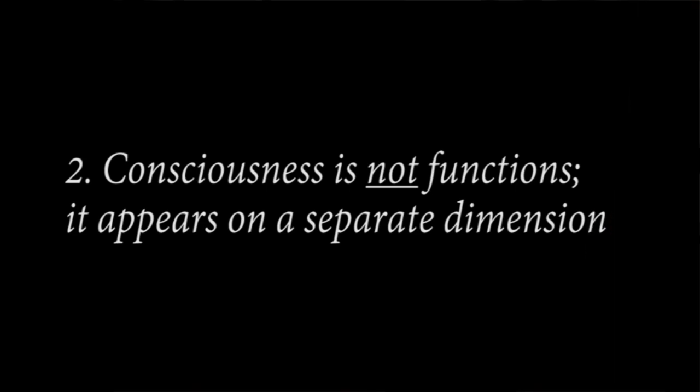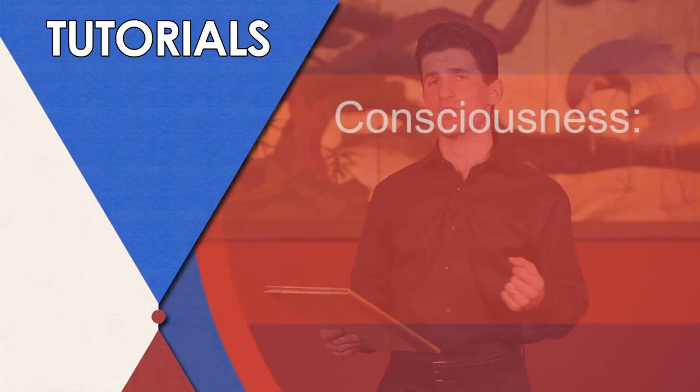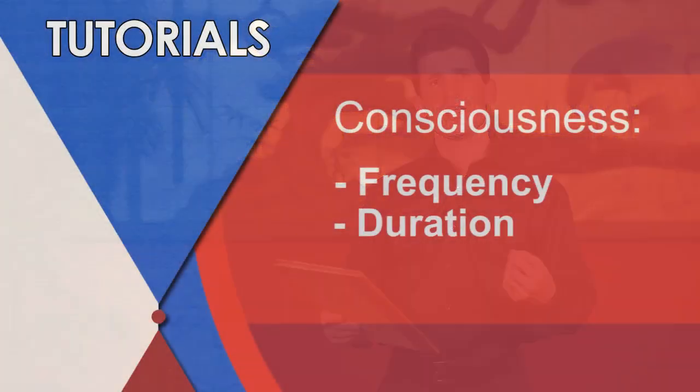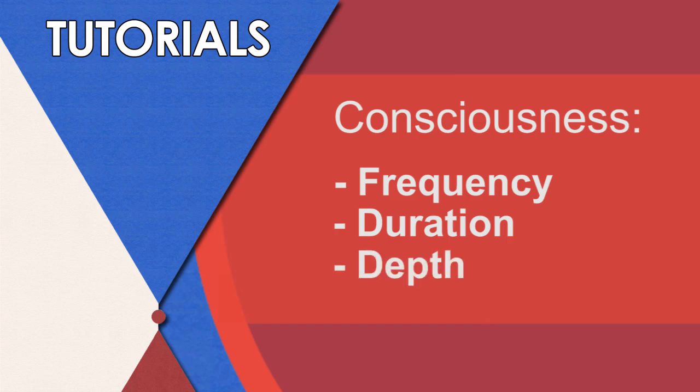The nuances of the development of Siddhartha point to the three parameters by which we measure consciousness. The first is frequency, in the sense of how frequently I remember to be conscious. The second is duration, in the sense of how long I maintain and hold my consciousness each time I make an effort. And the third is depth — of how many aspects I am aware of when I am conscious.